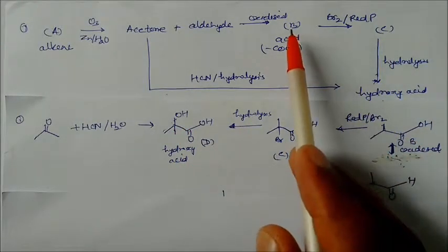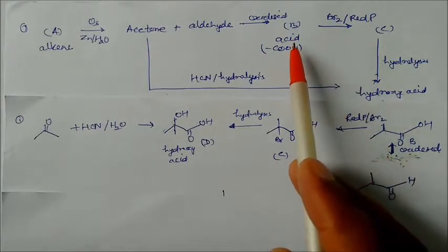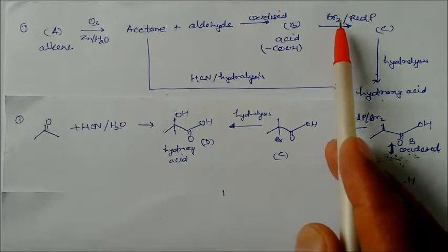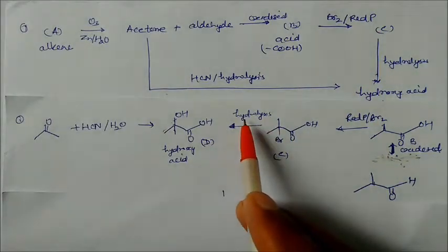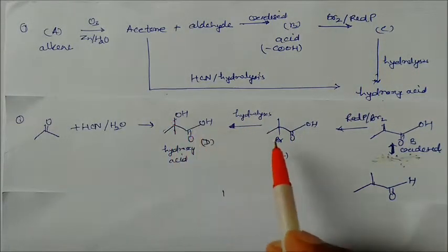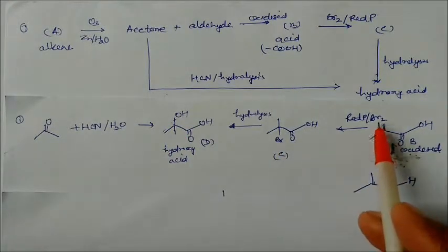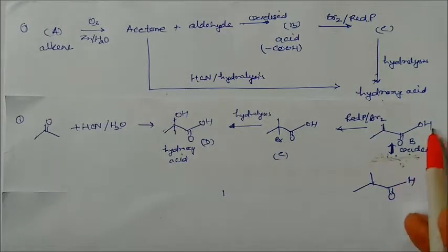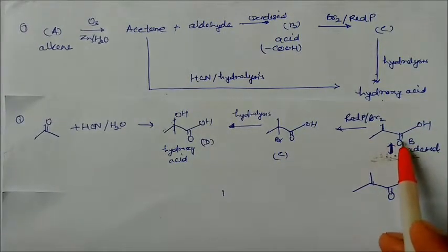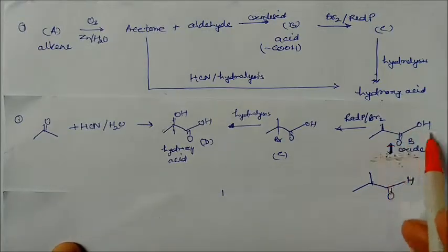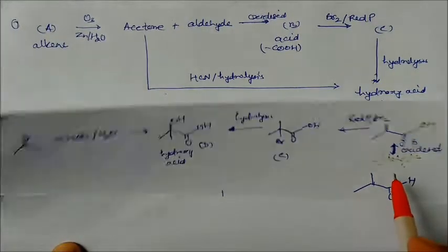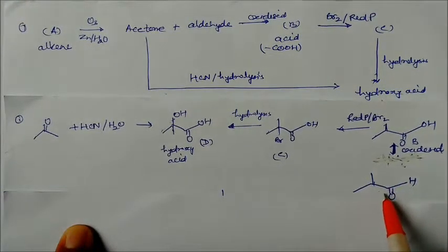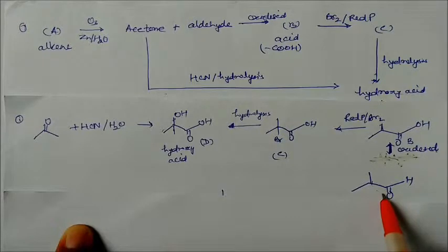Compound B is a carboxylic acid that reacts with Br2 and red phosphorus. On hydrolysis, OH is replaced by bromine, because bromine reacts with this compound giving bromine here. So this compound must be like this. Product B is obtained from the aldehyde.